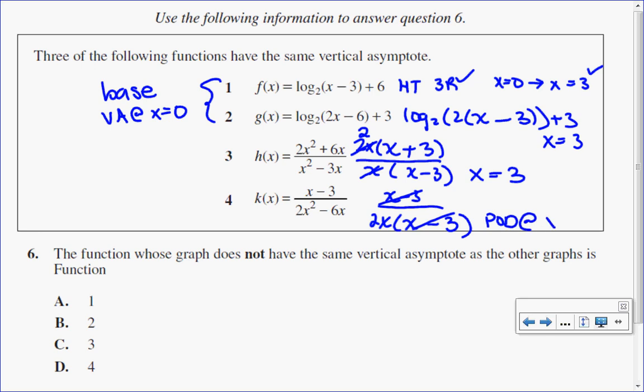So I have a point of discontinuity at 3, not a vertical asymptote. So the one that doesn't have the same asymptote as the rest is function number 4, so d is the correct answer.